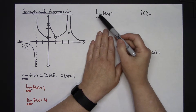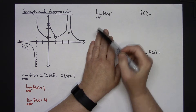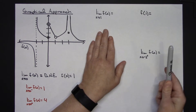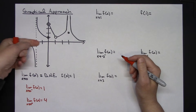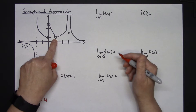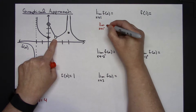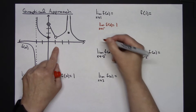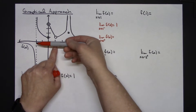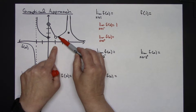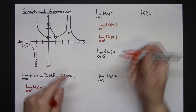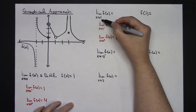Let's look at the limit as x approaches 1 of f of x. Again no left or right indicated, so I check both. Here's 1 on the x-axis. Coming from the left: as the function gets really close to 1, it approaches the y-value of 1. The limit from the left is 1. Coming from the right: following the function as it gets really close to 1, it also approaches the y-value of 1. The limit from the left and right are equal, so the overall limit as x approaches 1 of f of x is 1.